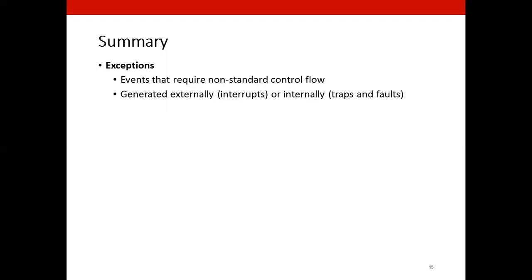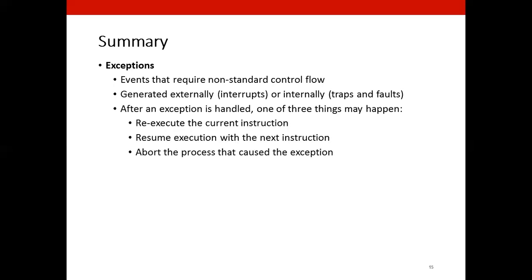To summarize, we talked about exceptions that are events that require nonstandard control flow, meaning control flow other than performed using jumps and calls. Generally it is generated externally through interrupts or internally through traps and faults. After an exception is handled, one of three things may happen: re-execute the current instruction, resume execution with the next instruction, or abort the process that caused the exception. We have talked about the key concept that would be useful to the abstraction of processes, and in the next video we discuss what is a process and how are they managed.